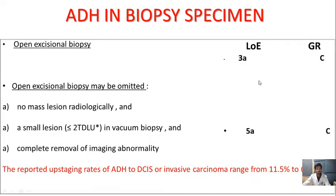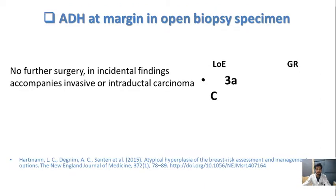It is generally diagnosed with open excisional biopsy. However, open excisional biopsy may be omitted if there is no mass lesion on radiologic imaging, or the lesion is small (involving less than or equal to 2 terminal duct lobular units on vacuum biopsy), or there is complete removal of the imaging abnormality — supported by level of evidence 5A and grade C recommendation. The reported upstaging rates of atypical ductal hyperplasia to ductal carcinoma in situ or invasive carcinoma ranges from 11.5 to 62%. No further surgery is recommended for incidental findings accompanying invasive or ductal carcinoma.